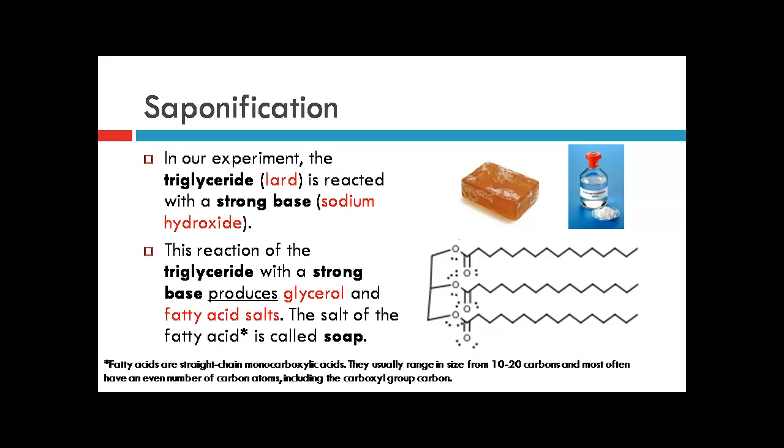In this saponification process, the triglyceride, which is a fat or oil, or in this case lard, is reacted with a strong base. In this experiment, we use sodium hydroxide. This reaction of the triglyceride with a strong base produces glycerol and fatty acid salts. The salt of the fatty acid is called soap.